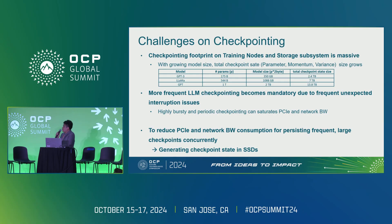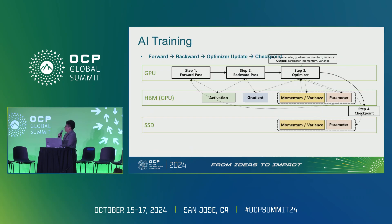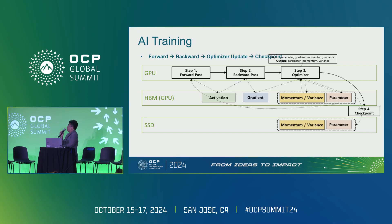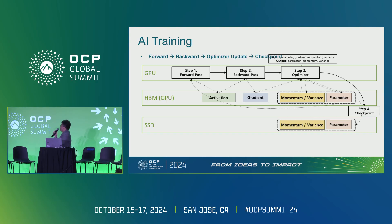We are trying to generate the checkpoint state in the SSD to solve this problem. In LLM training, there are four steps per iteration: forward, backward, optimizer state update on the GPU, and checkpointing. After forward, backward, and optimizer update, we need to store the optimizer outputs — momentum, variance, and parameters — to the SSD. This is the checkpoint operation.